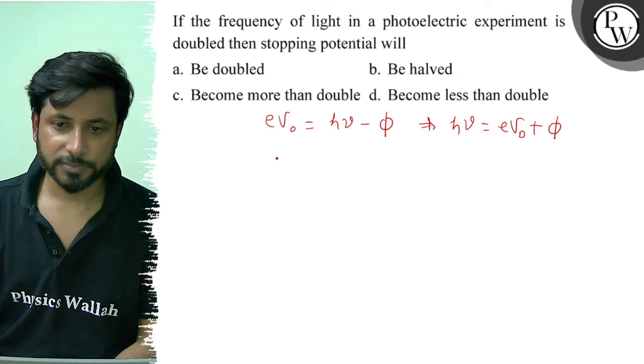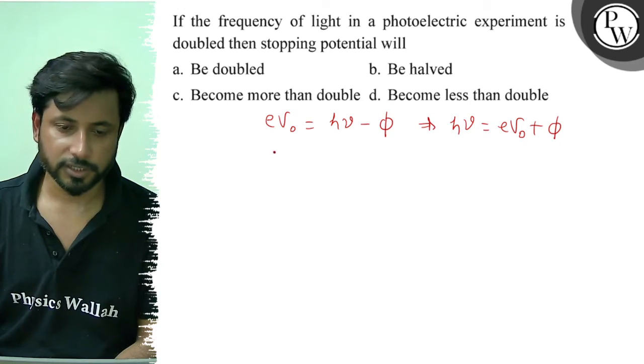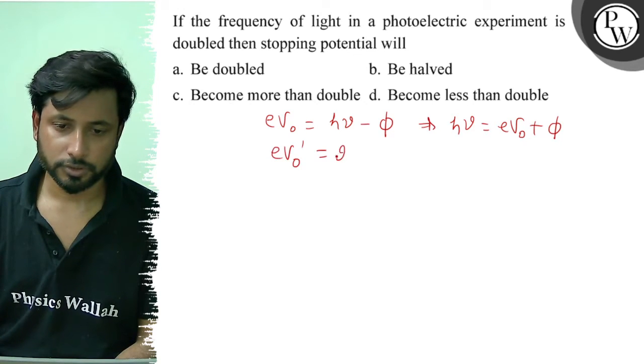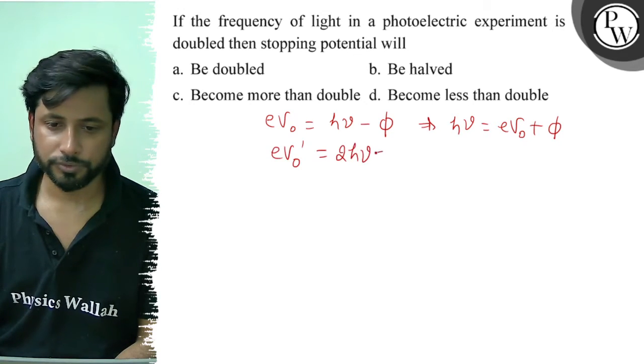Now, what is next case? Frequency will be doubled. So stopping potential is how much? eV₀ dash equals 2h nu minus phi.